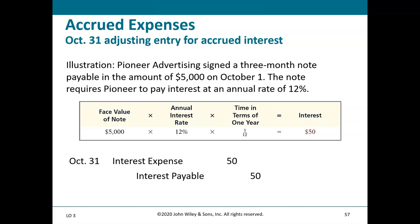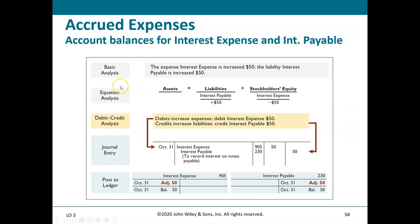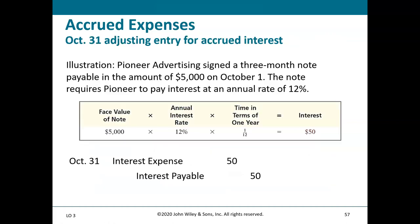Here is the analysis: determine what hasn't been recorded, look at the accounting equation, determine debits and credits, record the journal entry, and post to the ledger. Remember the formula: face value × annual interest rate × time (in terms of one year). Typically it's one month out of 12, but some problems may require two months (2/12), so watch carefully.